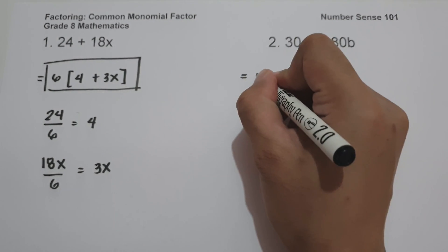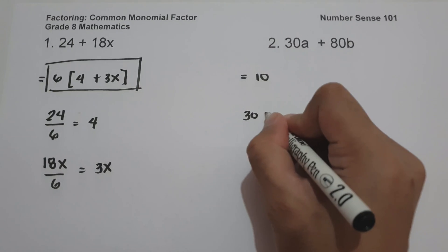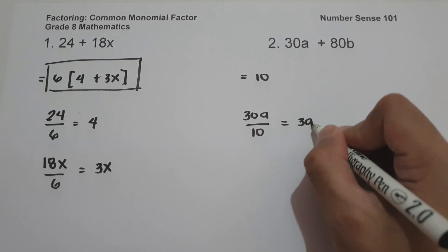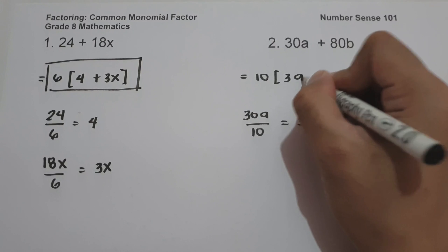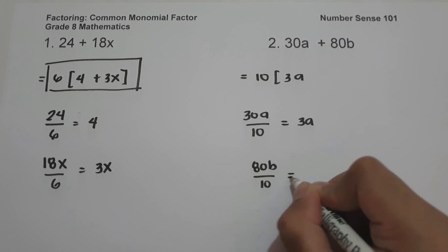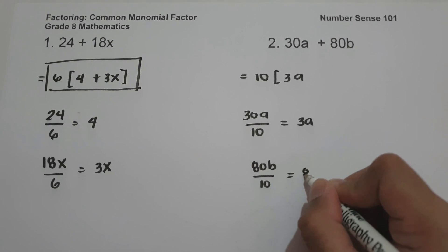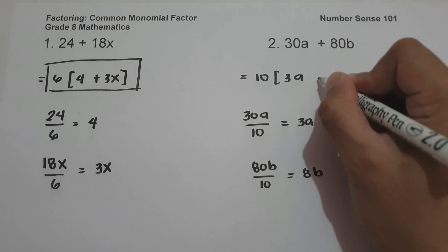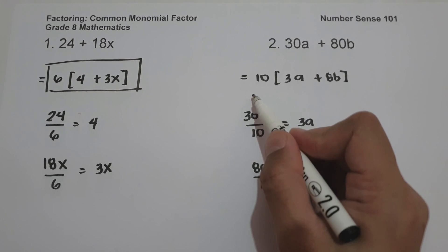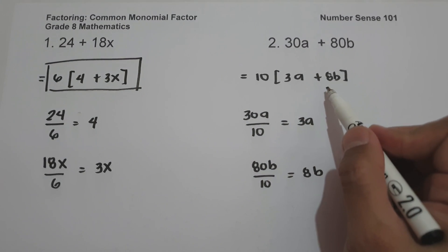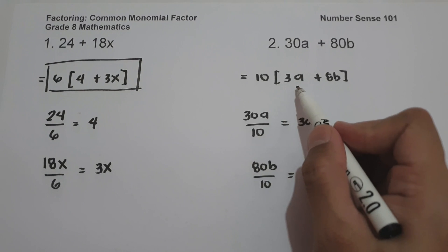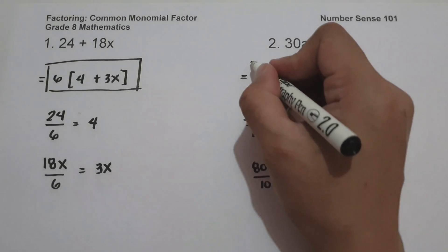The GCF of 30 and 80 is 10. Let us have 30a divided by 10: 30 divided by 10 is 3, so this will be 3a. And then 80b divided by 10: 80 divided by 10 is 8, so this will be 8b. So 10 is the greatest common monomial factor, 3a plus 8b is the quotient of the polynomial, and 10 times the quantity 3a plus 8b is the factored form and this will be our answer.